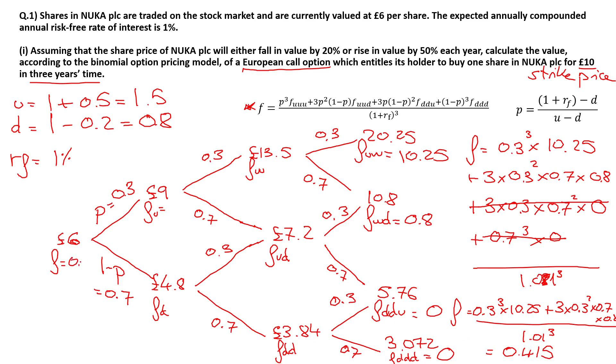So this is the current value of a European call option with a strike price of £10 in 3 years' time. If you really want to test your knowledge on this concept, please do the same exercise but treat it as a put option, not a call option, and let me know down in the comments what you get.